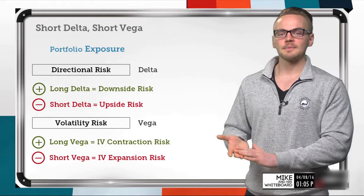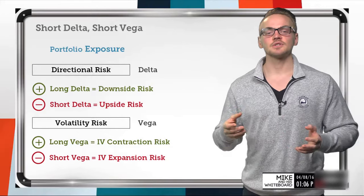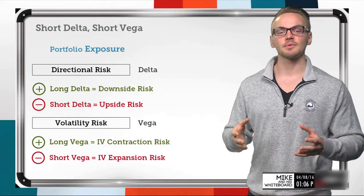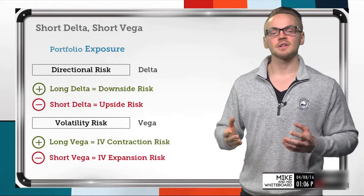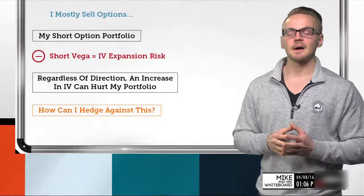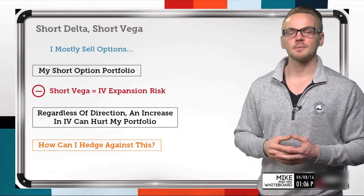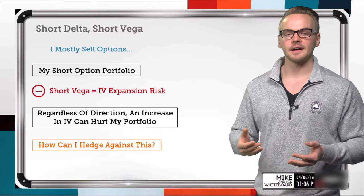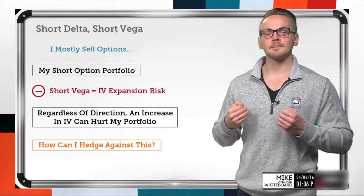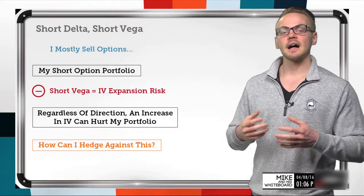So we understand long and short delta and long and short vega. But let's say most of my portfolio is made up of short options where I'm selling premium, because we love that theta decay effect and the potential implied volatility overstatement where we're collecting more than maybe we should for an implied move. If I've got a primarily short premium portfolio, I'm going to have a lot of short vega. As we saw, if I'm selling a lot of premium and compounding that short vega risk, my risk is an IV expansion.